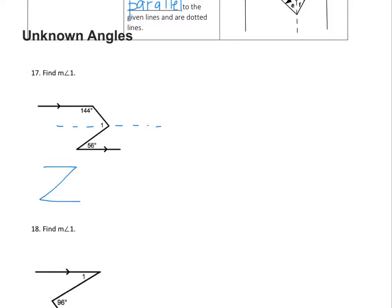And again it's dotted and parallel to the line above it and below it. I'm going to split angle 1 up into two variables, X and Y.